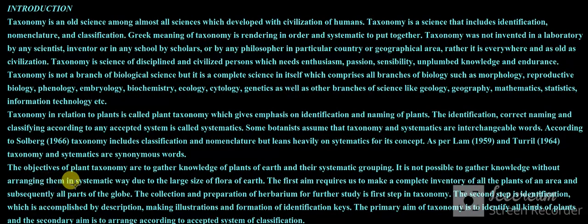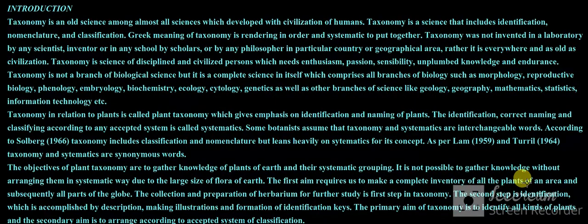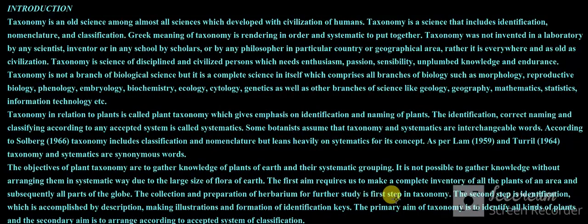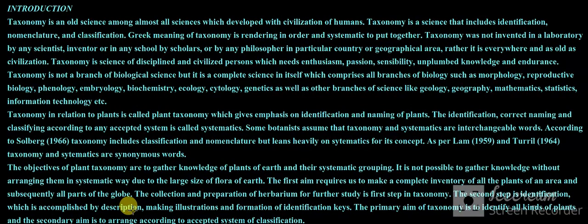The objectives of plant taxonomy are to gather knowledge of plants of the earth and their systematic grouping. It is not possible to gather knowledge without arranging them in a systematic way, due to the large size of flora of earth. The first aim requires us to make a complete inventory of all the plants of an area and subsequently all parts of the globe. The collection and preparation of herbarium for further study is the first step in taxonomy.